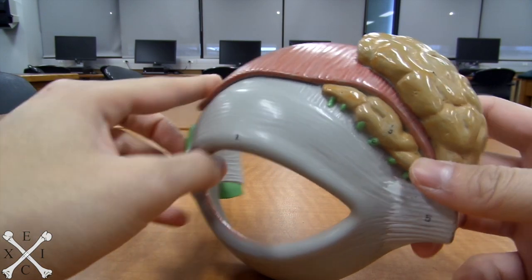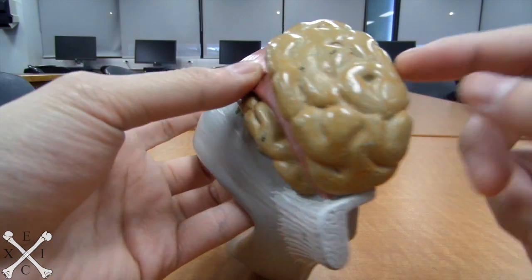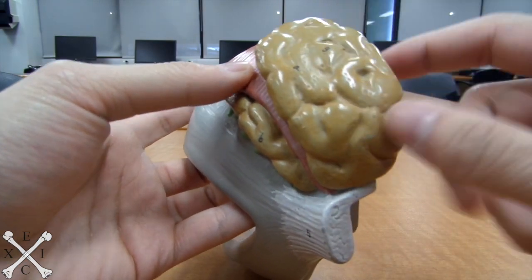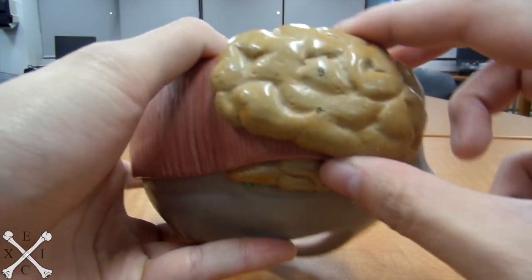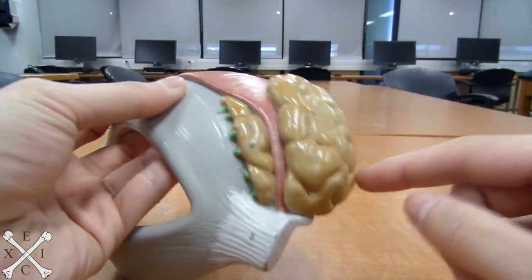First thing we'll be checking out is your lacrimal gland, which is this structure right here. Looks kind of like an interesting brain structure, but it's not. It's a lacrimal gland.